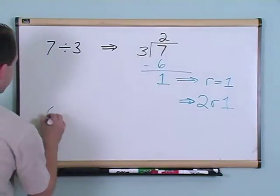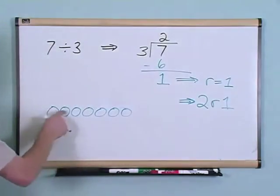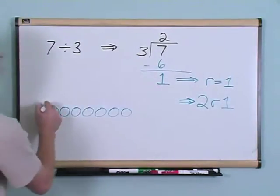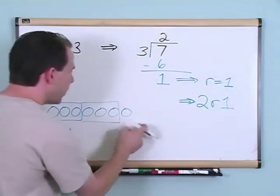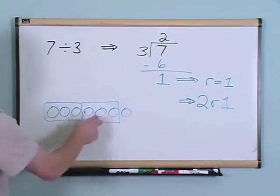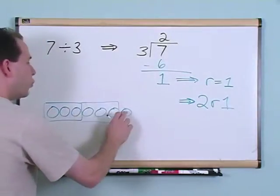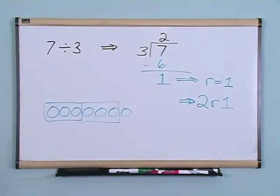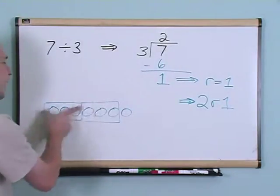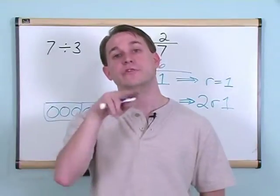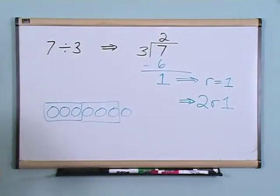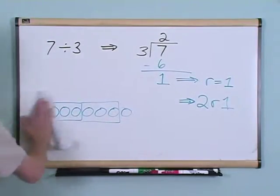Now let's see why that makes sense. Let's draw seven balls: one, two, three, four, five, six, seven. Now let's divide by groups of three. There's one group of three, there's two groups of three. I can't make another group of three because I don't have enough balls. So I leave the last one out. When I divide seven by three, I can only do it two times, and I have one ball left over. That's called the remainder — two with a remainder of one.